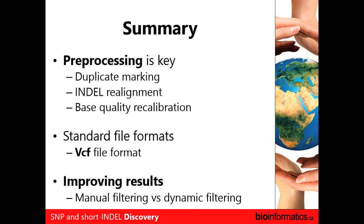What about using variant callers for filtering — if they both agree on a variant, it could be true? That certainly works, assuming the variant callers use very different algorithms. In the 1000 Genomes project, SAMtools and a variant caller called GLF Multiples from the University of Michigan both used almost the same exact equations, so they had almost the same results and thought they must be good. But as soon as you compared it to another variant caller that didn't use the same equations, you did see differences. So you have to be careful about that, but it is a good approach.